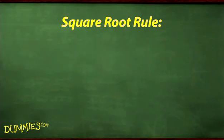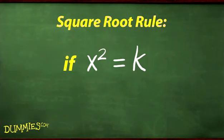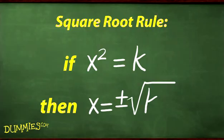When a quadratic equation consists of just a squared term and a constant, you solve the equation by using the square root rule. If the square of a variable is equal to the number k, then the variable is equal to the principal square root of k or its opposite.